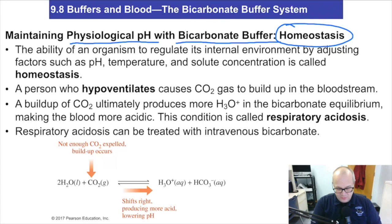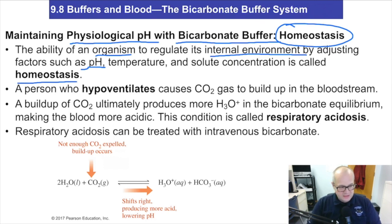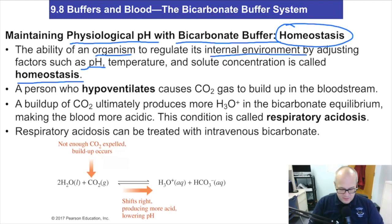Basically, an organism can regulate its own internal environment by adjusting factors like pH, temperature, and other things — that's called homeostasis. When everything's just running the way it's supposed to, that's homeostasis.